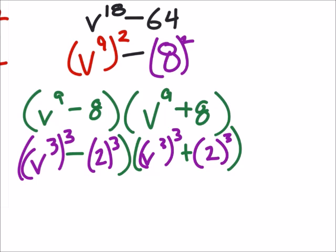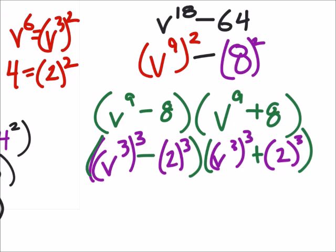Alright, so we got the difference of cubes and the sum of cubes on this one. So just looking at, so yeah, this one should have been green right here. If we look at this first set of parentheses, then we get v cubed, this would be minus the b value, which is 2.